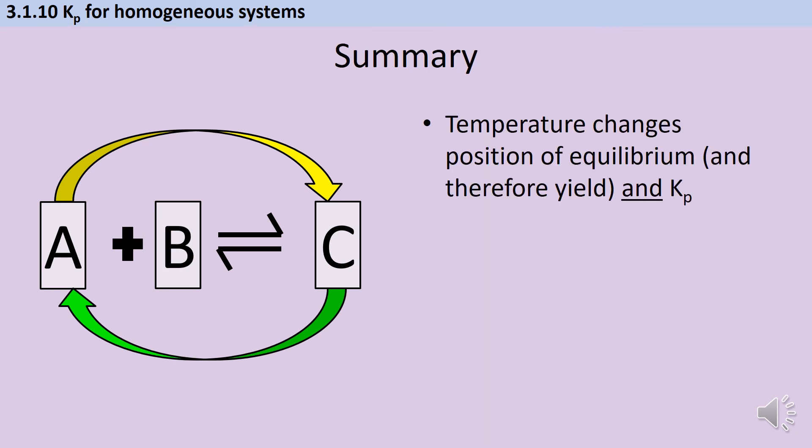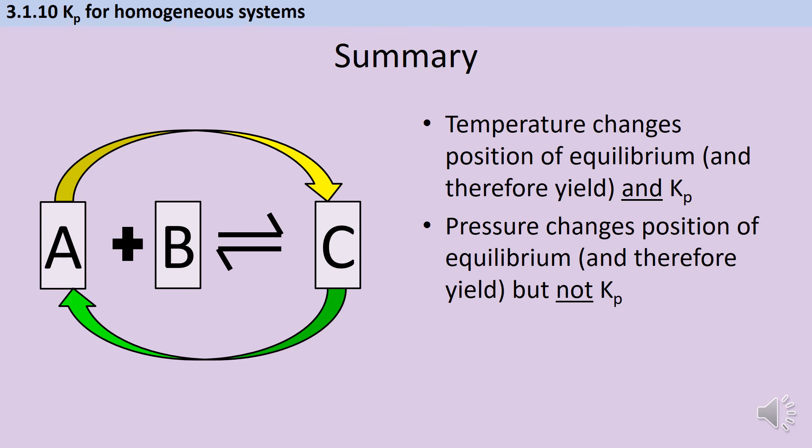So to summarise, temperature will change the position of equilibrium and therefore the yield, and it will change the value of Kp. Pressure changes the position of equilibrium and therefore the yield, but it doesn't change Kp. And using a catalyst doesn't change the position of equilibrium or Kp.